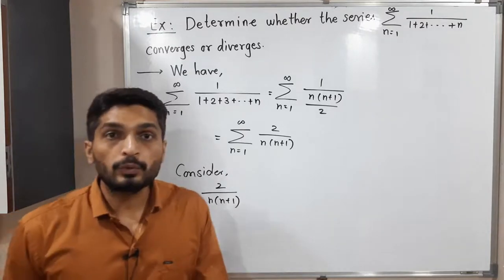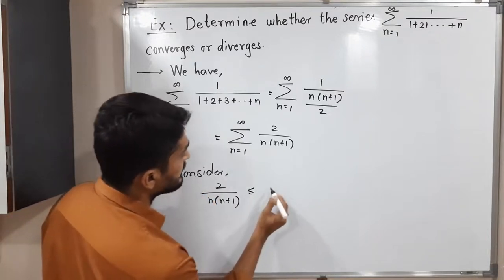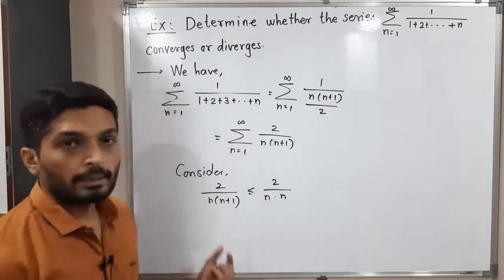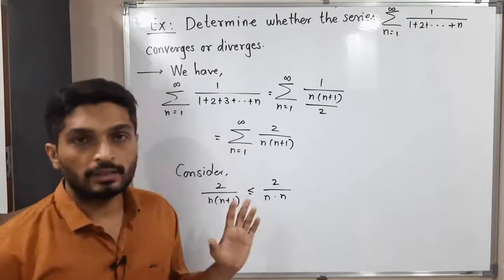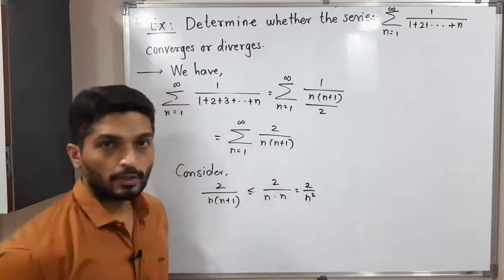Consider 2/(n(n+1)). You know that if you reduce the denominator, the value will get increased. This is less than or equal to 2/(n×n). I replace n+1 by n, reducing the denominator, so the value increases. This is equal to 2/n².